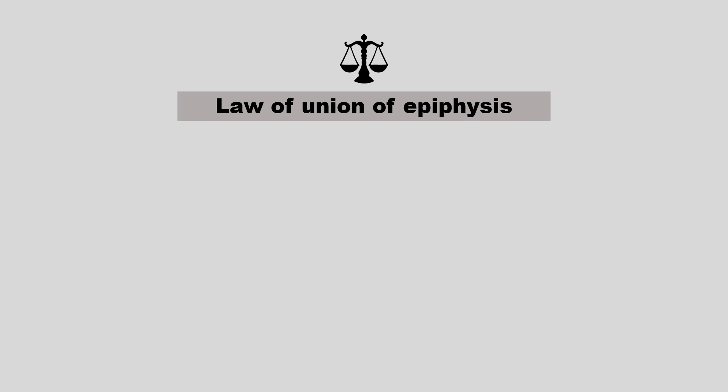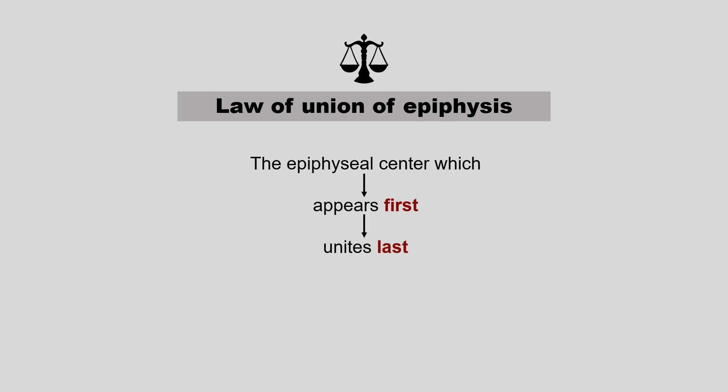Before going to the violation, we should first know what is the law of union of epiphysis. As we all know, a typical long bone has a diaphysis and two epiphyses on its two ends. The law states that the epiphyseal center which appears first will unite last with the diaphysis, and vice versa. This means the epiphyseal center which appears first will remain longer and unite with the diaphysis later than the other center, so that end of the bone is counted as the growing end.